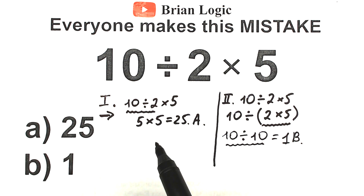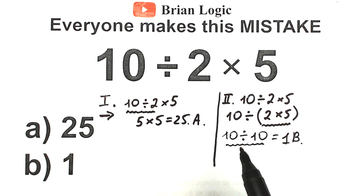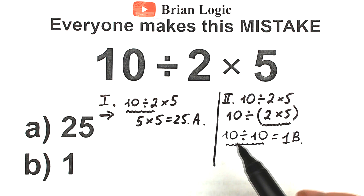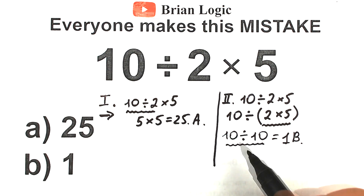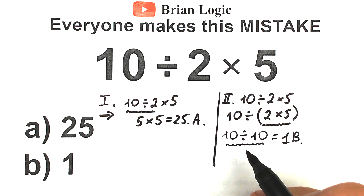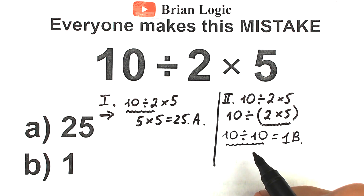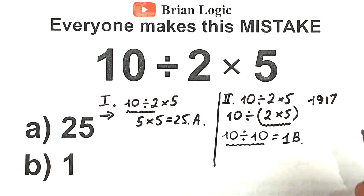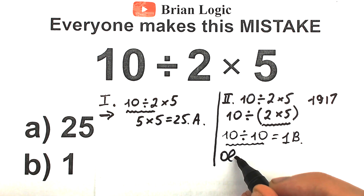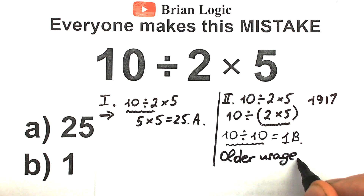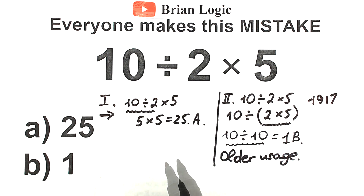So the first interpretation gives us 25, and the second interpretation gives us 1. The main question is: which is the correct answer — 1 or 25? Option B, which gives 1, is not the correct answer that calculators will evaluate. Rather, it's what someone might have interpreted the expression based on older usage — maybe 70, 90, or 100 years ago. Option A, giving 25, is how calculators work nowadays.